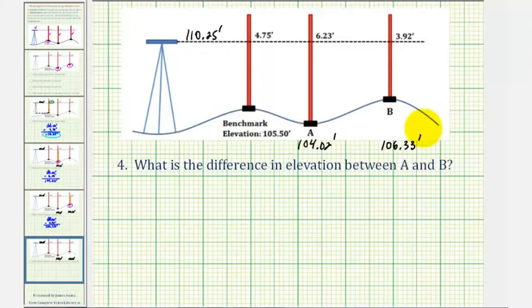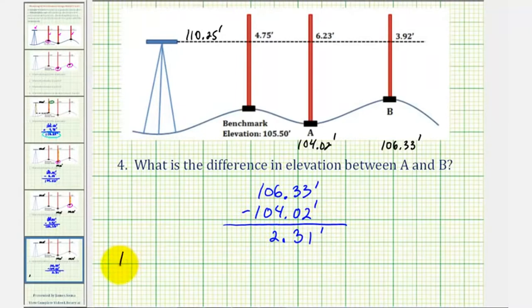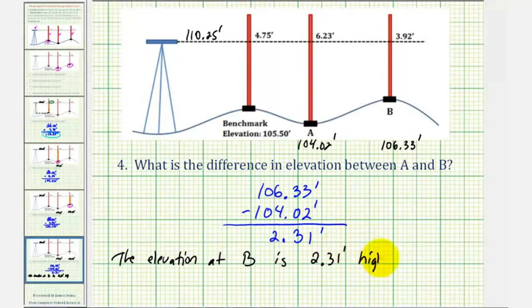Now let's look at our last question: determine the difference in elevation between point A and point B. Since the elevation is higher at point B, we take the elevation at point B and subtract the elevation at point A. Three minus two is one; three minus zero is three; six minus four is two; zero minus zero is zero; one minus one is zero. So the elevation at B is 2.31 feet higher than the elevation at A.